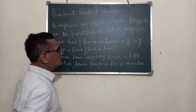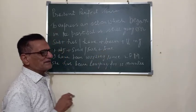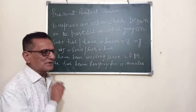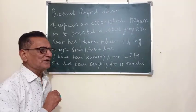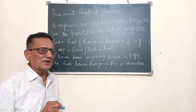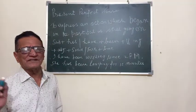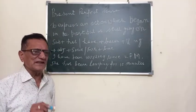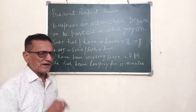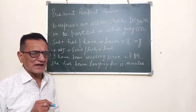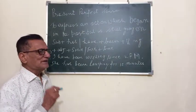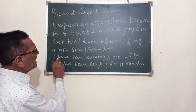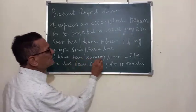The time reference must always be given. The difference between simple continuous and perfect continuous is that in simple continuous no time reference is given — that is the mistake students generally make. But in the present perfect continuous, time is always given. You are to use 'since' or 'for' for time reference. For example: I have been working since 2 p.m.